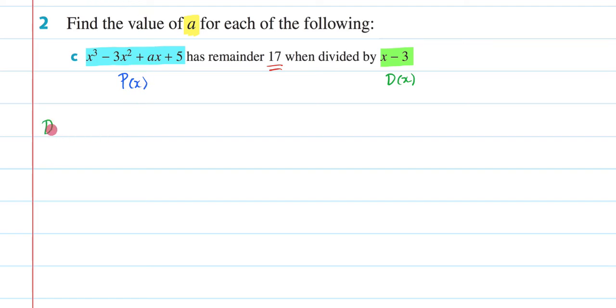So we know that we're going to say, well, d(x) is going to be equal to 0. So that means we're going to get x minus 3 is equal to 0, so x is going to be equal to 3.